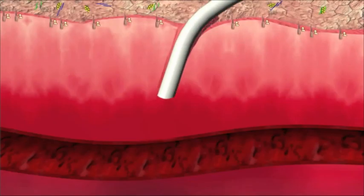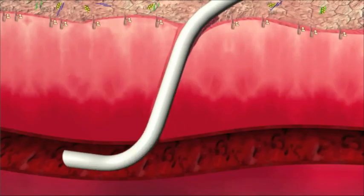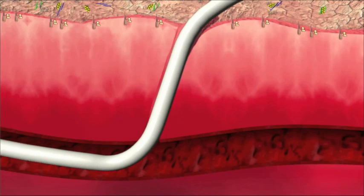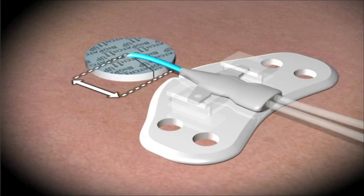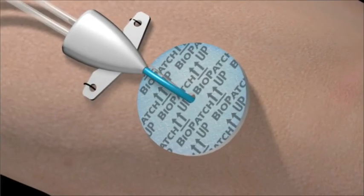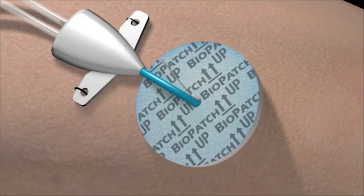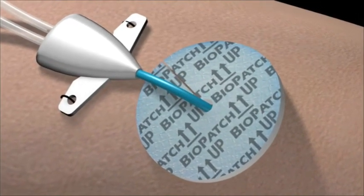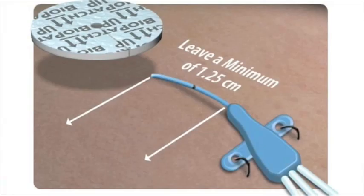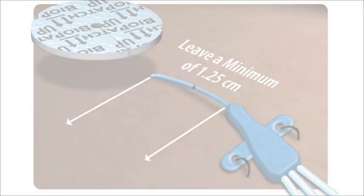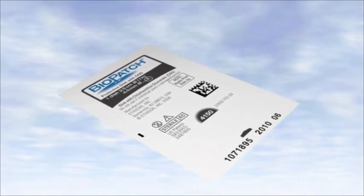Insert catheter into prepared skin area. When fixing the catheter in place with a suture or sutureless securement device, leave enough room for BioPatch to lie completely flat against the skin. Not leaving enough room will prohibit the BioPatch disc from 360 degree protective coverage. Leave approximately a half inch or 1.25 centimeters.